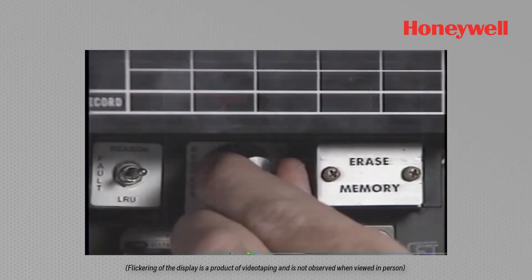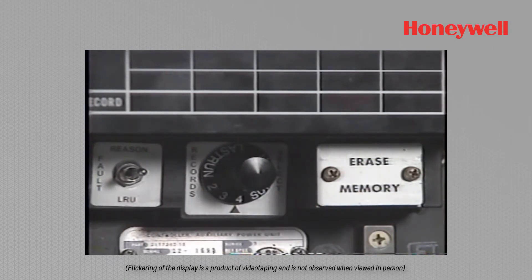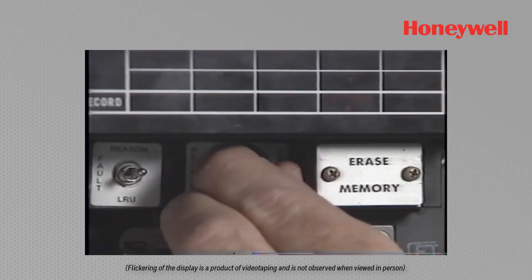Remember, record select positions 2, 3, 4, and LRU summary operate the same as when the APU is not running.